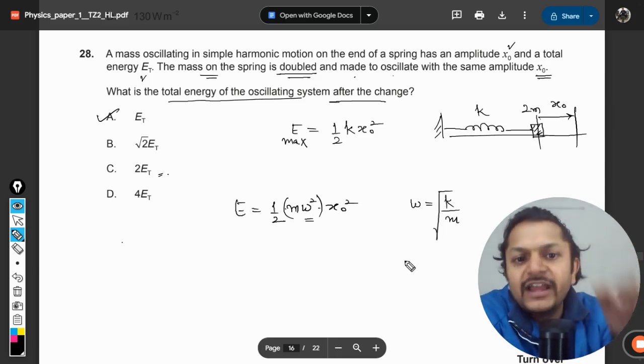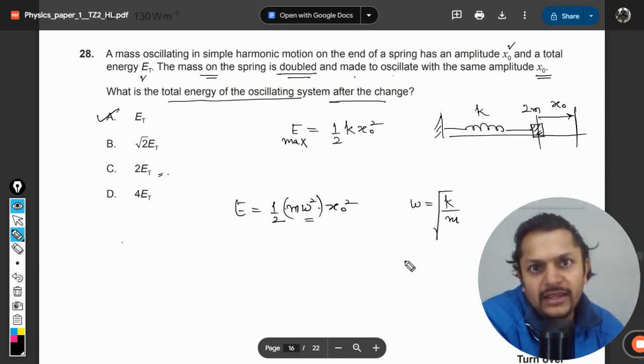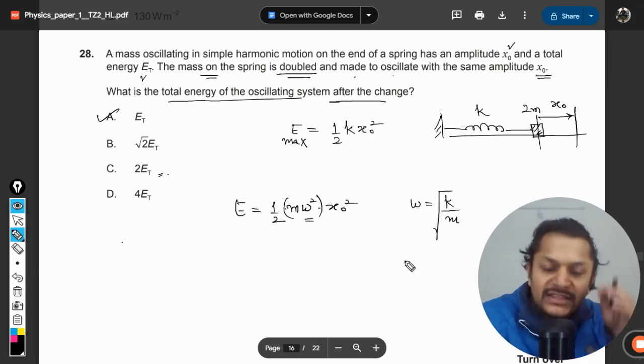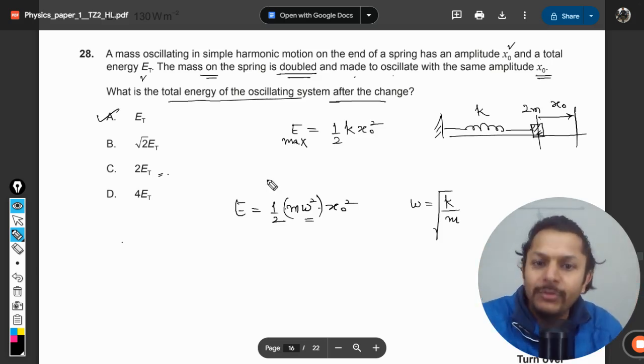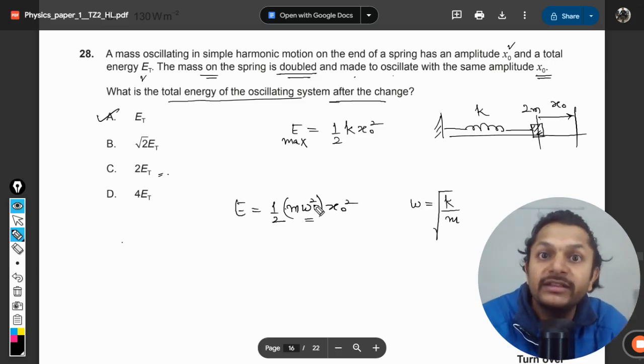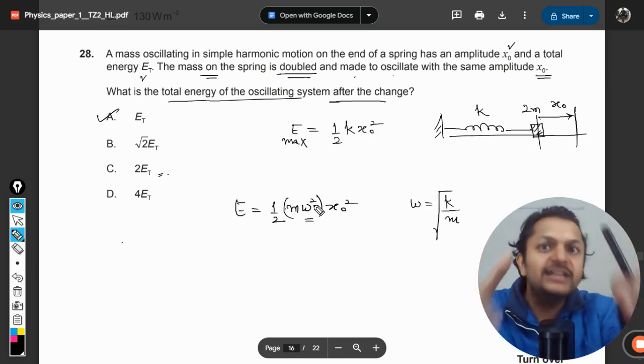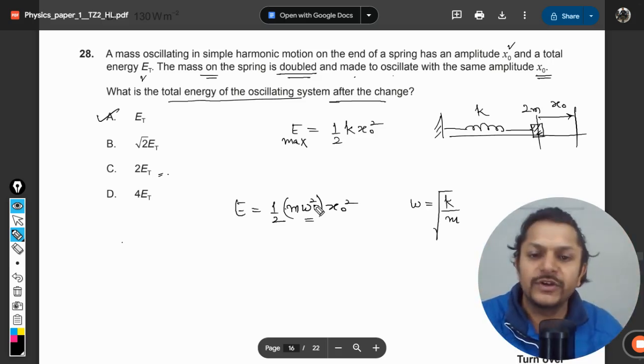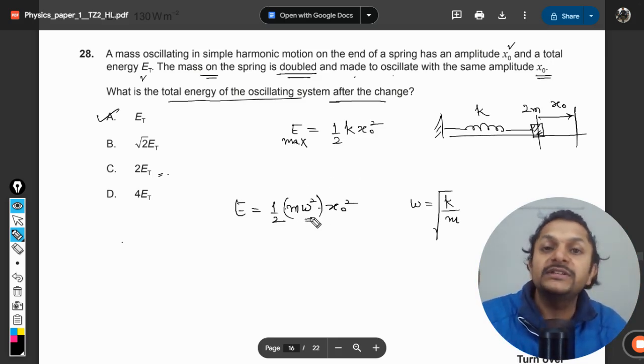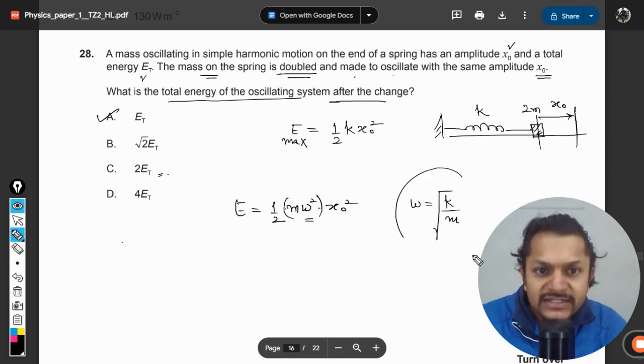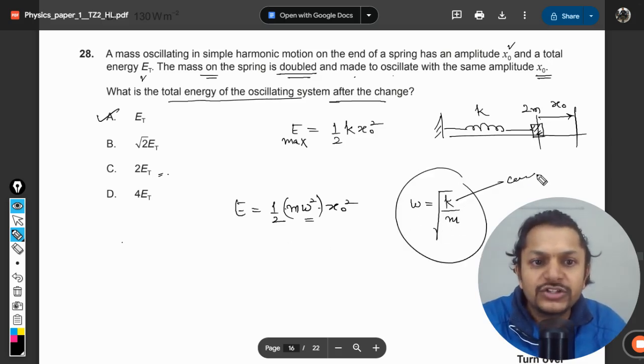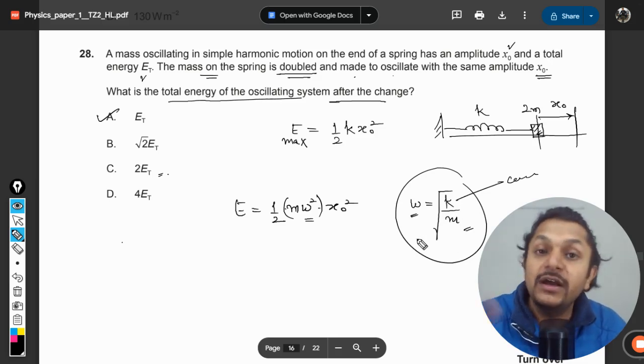This is how we define the natural frequency. Omega is basically the natural frequency of the system. What is natural frequency? You just disturb it and leave it. The frequency chosen by the system by itself is the natural frequency. So this natural frequency is in itself dependent on the mass m.